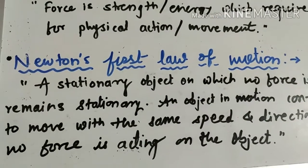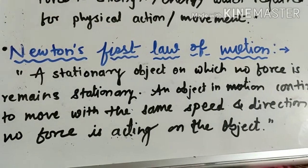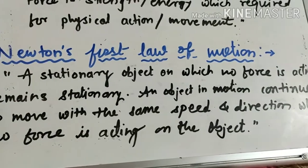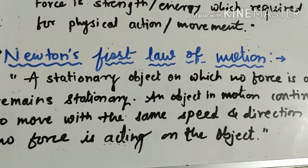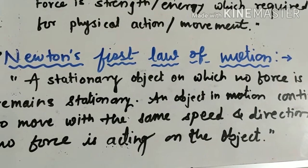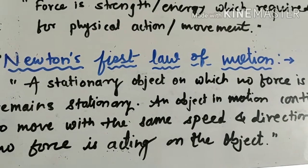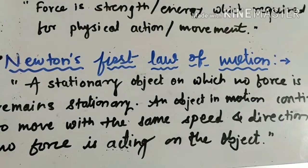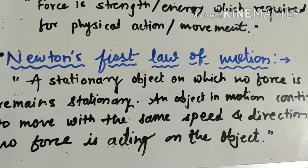So what is Newton's first law of motion? This law states that a stationary object on which no force is acting, it remains stationary. In Newton's first law of motion, there are two sentences. We'll understand this first sentence. A stationary object on which no force is acting remains stationary.